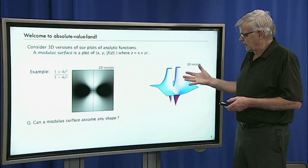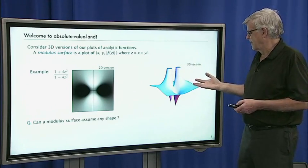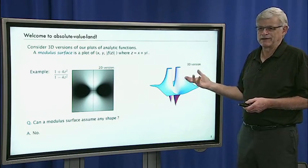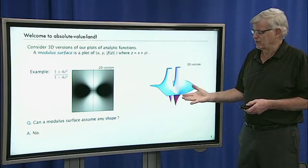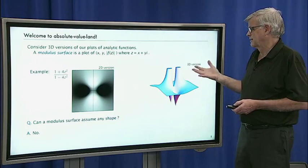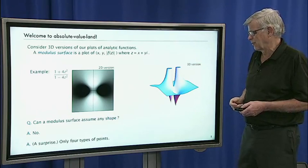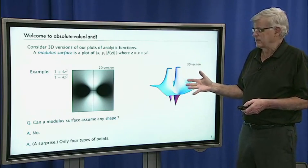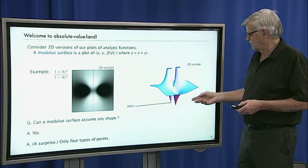One of the first questions that comes up is: can we get any shape this way? An interesting aspect of these kinds of plots is that no — the shapes we get are very highly constrained. In fact, there are only four different types of points on these kinds of surfaces.